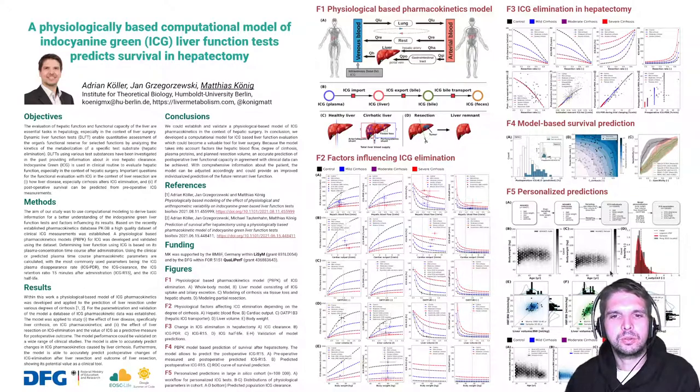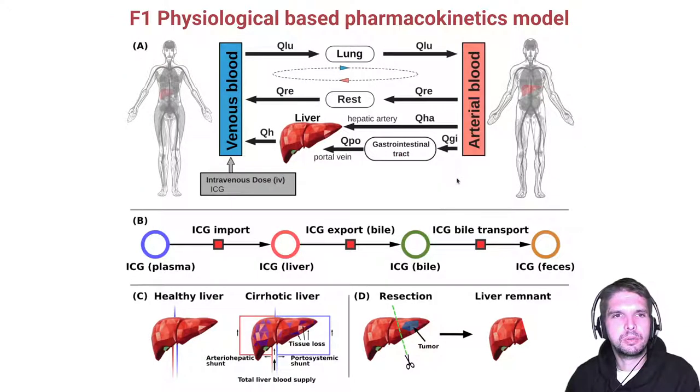The application of test substances to measure the dynamical liver function is a key tool in this process. Within this work, we developed a physiological-based pharmacokinetic model for the test substance ICG and applied it to study various degrees of cirrhosis and partial hepatectomies. ICG is taken up by the liver and subsequently exported in the bile.